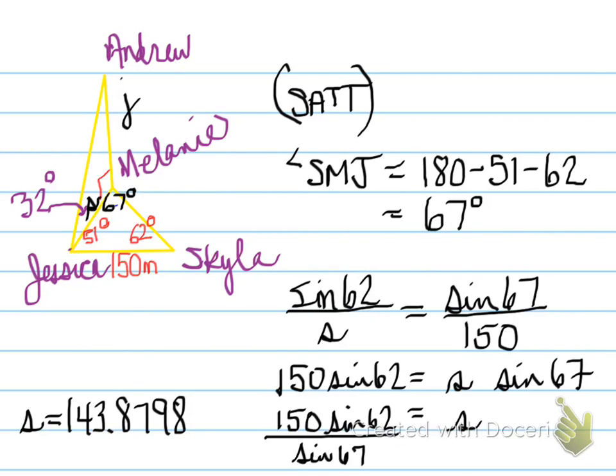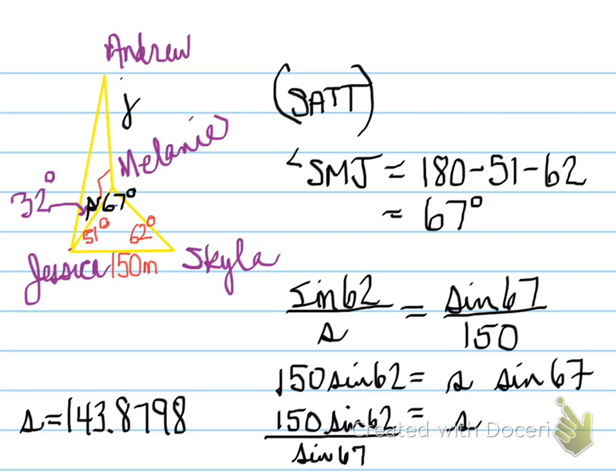So we need to find now side J. We can use tangent. Now, some of you are probably going, how come we can use tangent? Well, look at this particular triangle. This triangle right here has a right angle triangle. We know side S, and we know this angle. We need side J. Side J is opposite. Side S is adjacent. So we're going to use tangent of 32 is equal to J over S, which we found.